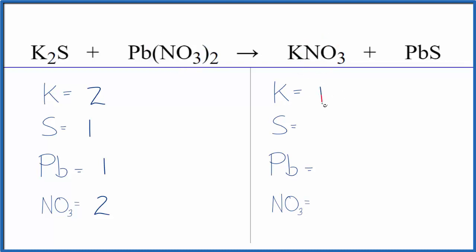We have one potassium, one sulfur, one lead, and then just the one nitrate ion. So you can see it's a lot neater to work with.